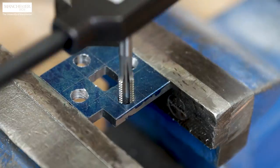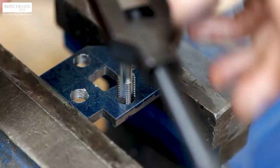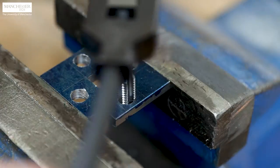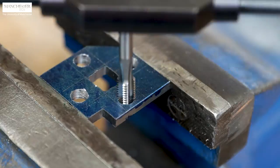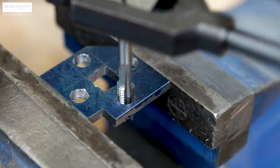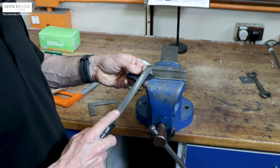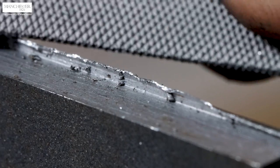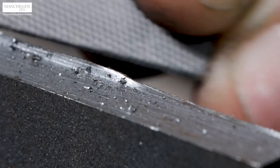For the second step of threading, we will repeat the same procedure and tap the hole again using the number two tap. As a last step, take the number three or plug tap to create a full form thread in each of the two tapped holes as per the drawing. Finally, safely deburr any sharp edges for safe handling of the part.